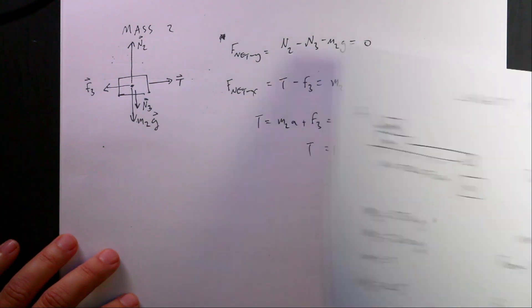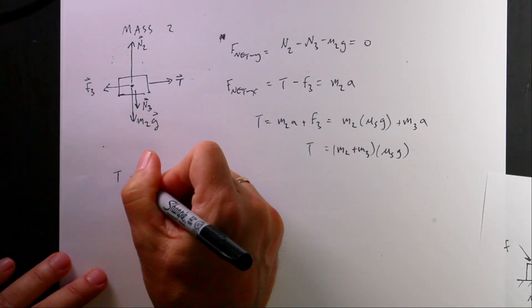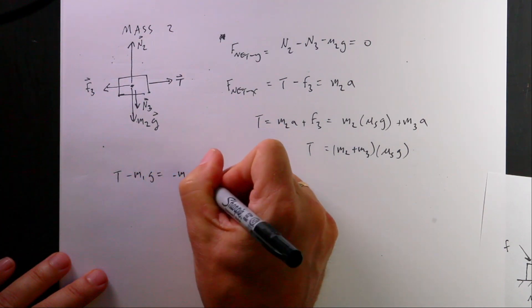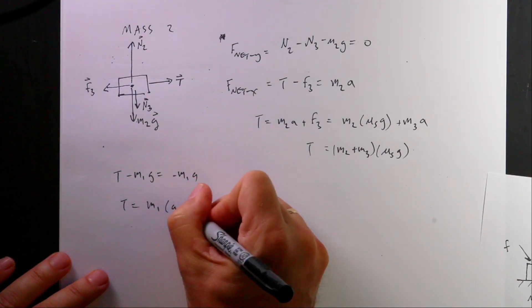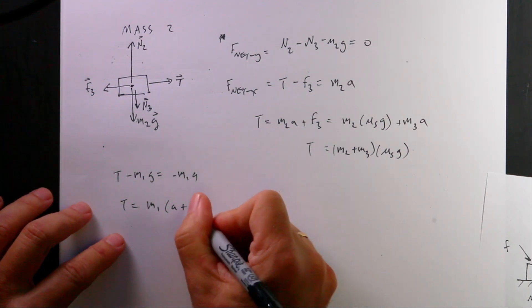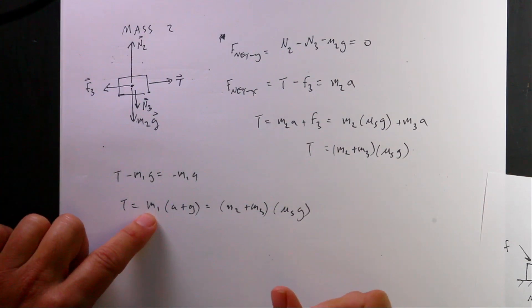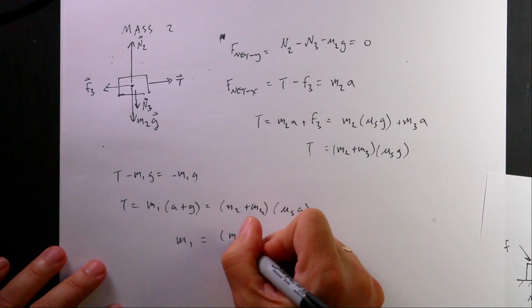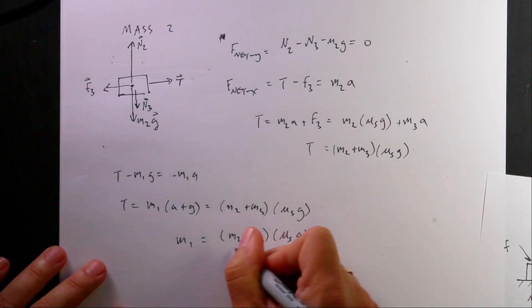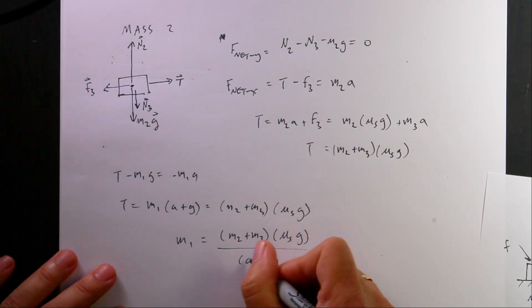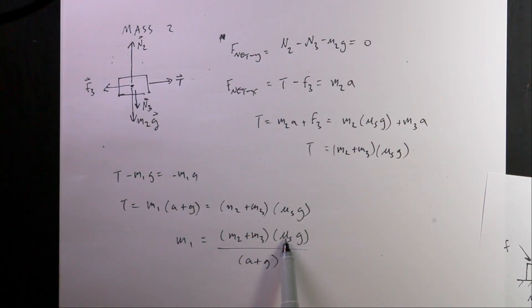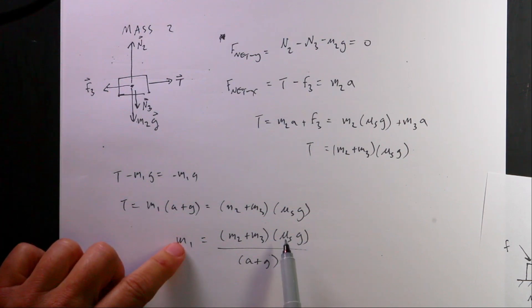Now I go back to the equation for mass 1: T minus M1g equals negative M1a, which rearranges to T equals M1 times (a plus g). Setting this equal to (M2 plus M3) times mu_s times g and solving for M1: M1 equals (M2 plus M3) times mu_s times g, all divided by (a plus g). As a unit check, mu_s is dimensionless and both numerator and denominator have units of acceleration, giving units of mass — correct. Also, if mu_s equals zero, M1 equals zero, which makes physical sense.